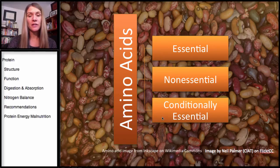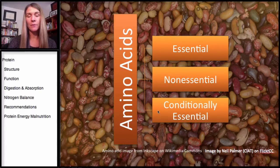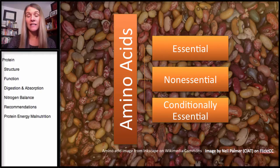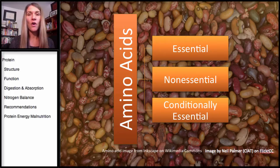Then there are the conditionally essential amino acids. And an example is cysteine, tyrosine. These are necessary just for infants, and even more important for preterm infants. So it's only under a certain condition that they become essential.